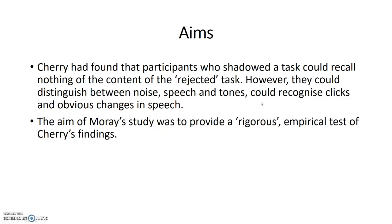Moray's aim was to provide a rigorous empirical test of Cherry's findings. Cherry had found that participants who shadowed a task could recall nothing of the content of the rejected task. However, they could distinguish between noise, speech, and tones, could recognise clicks and obvious changes in pitch. So while no one could remember any content of the rejected message, there were some aspects people could remember. Moray wanted to provide rigorous evidence.